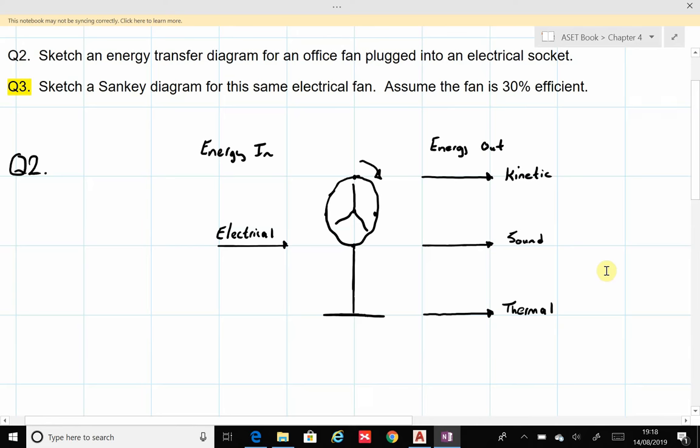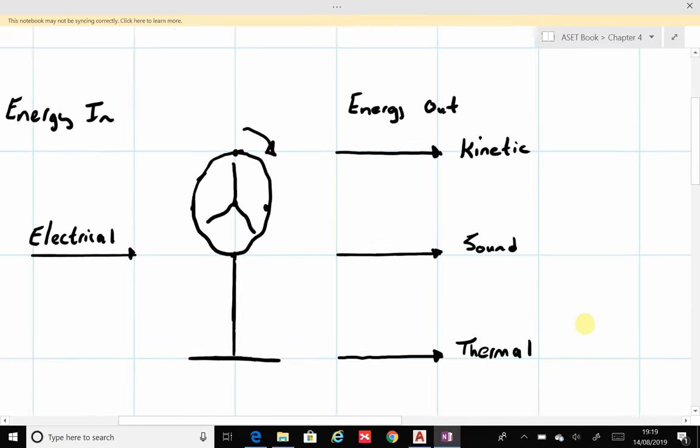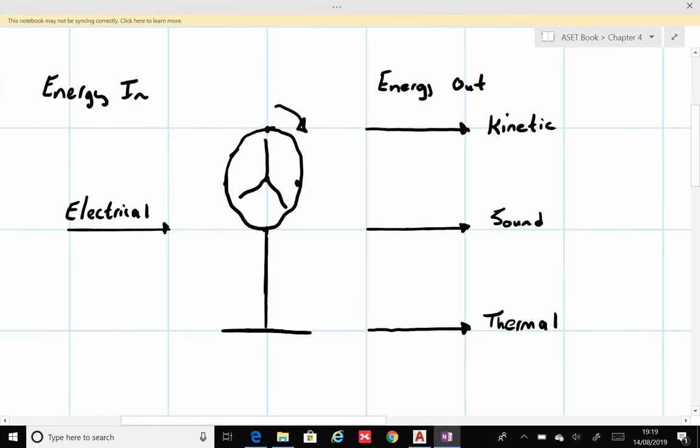In question two, there's a requirement to produce an energy transfer diagram for an office fan that's being plugged in electrically. On the left-hand side, as normal, we require the energy into the system, which in this case is electrical energy. The energy out of the system comes in three different forms. In this case, the required output or useful output energy is kinetic, but of course there's also going to be sound and thermal energy coming out of the system as well.